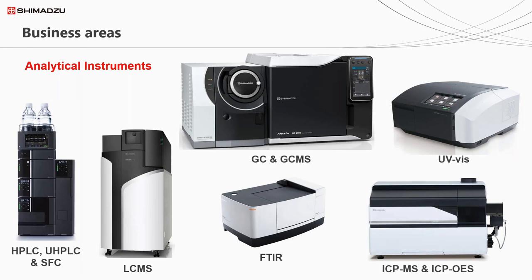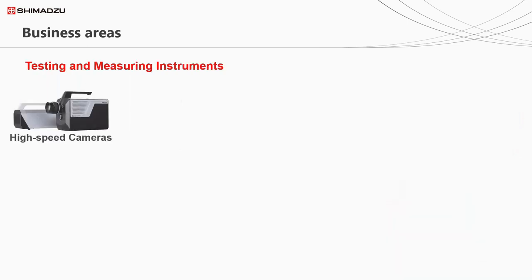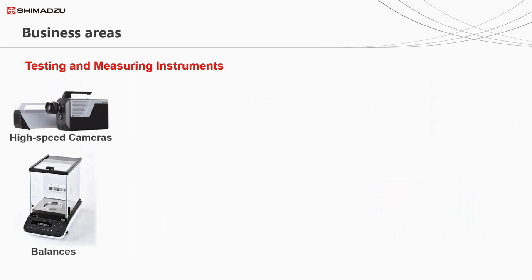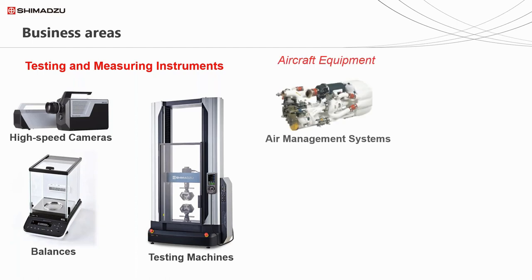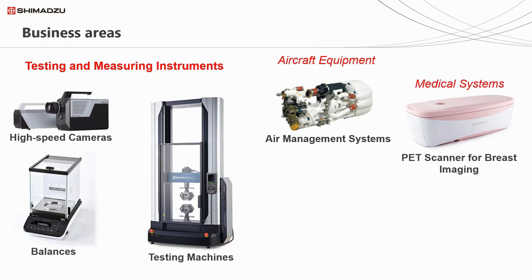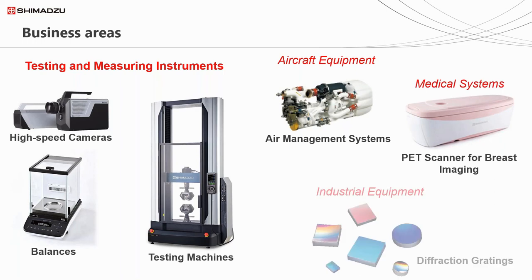Outside of the regular analytical equipment you find in the laboratory, we do various other divisions of equipment as well. We've been responsible for developing some high-speed cameras and balancers. We have an area dedicated to testing machines looking at tensile strength. We also have a separate division dedicated to aircraft equipment, medical devices, and some industrial equipment as well.